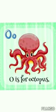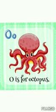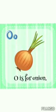O is for octopus. An octopus is a soft sea creature. It has eight long arms called tentacles, which it uses to catch food. O is for onion.